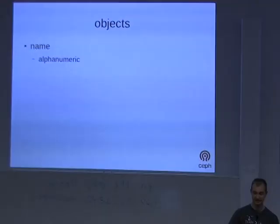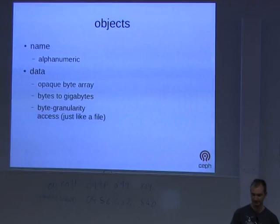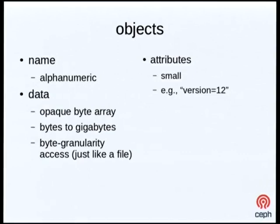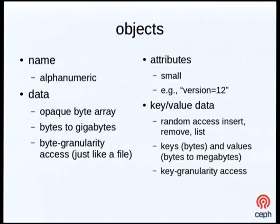The core is the basic data model. You're storing objects — an object is a unit of data that has some name you can choose, like 'foo' or some string of digits. There's some data associated with that object, which is an opaque byte array — so it looks sort of like a file, and can be anywhere from bytes to gigabytes, with byte-granularity access. You can truncate it, override a random extent, append to it. Objects also have attributes — small key-value pairs like 'version equals 12.' And the last, more unusual thing is that you can also store key-value data inside an object, giving you random access, insertion, removal, and listing — kind of like a NoSQL product or Berkeley DB file.